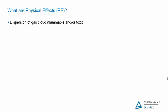Dispersion of a gas cloud, flammable and/or toxic, is the process during which the cloud spreads by mixing and diluting with air. Whilst the reality is not quite so clear cut, generally for risk analysis, releases are modelled in two categories.